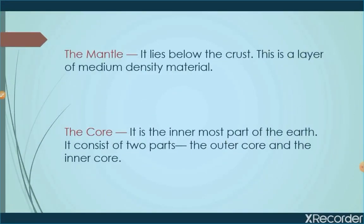The mantle lies below the crust. It is a layer of medium-density material between the crust and the core. The third layer is the core, the innermost part of the earth. It consists of two parts: the outer core, which is made entirely of molten metal, and the inner core, which is a solid ball of iron and nickel.